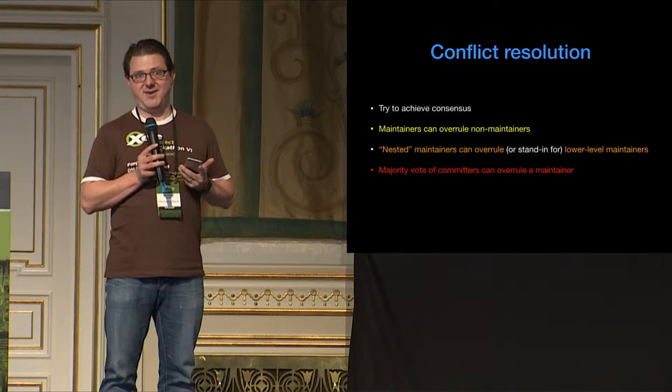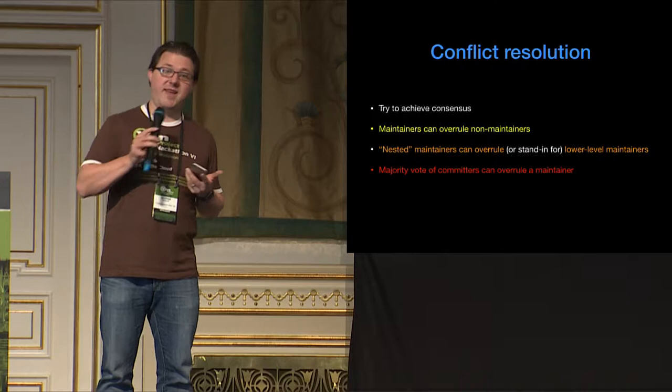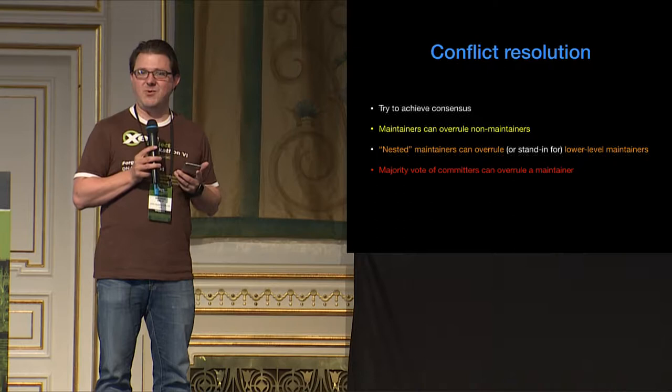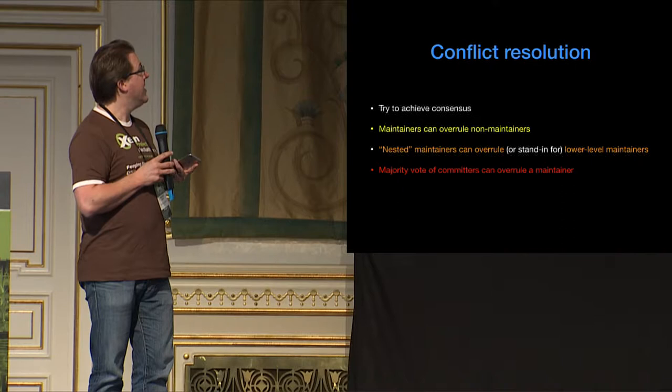Because there's an escalation possibility, usually none of these things actually happen. If someone says I don't think this is a good idea and the maintainer says I think it is, that person's probably going to say, well, I guess okay then — because if you can see that eventually you're going to be overruled, you might as well go along with it. But this level of escalation is there for you: if you think someone's being unreasonable, you can ask the maintainer to overrule, or if the maintainer's being unreasonable, you can go to the committers.